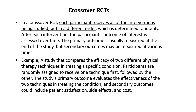In a crossover RCT, each participant receives all of the interventions being studied, but in a different order, which is determined randomly. After each intervention, the participant's outcome of interest is assessed over time. The primary outcome is usually measured at the end of the study, but secondary outcomes may be measured at various times.